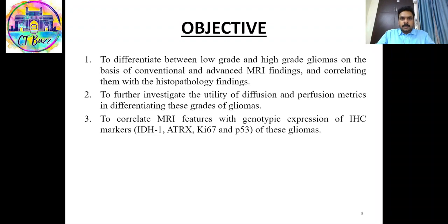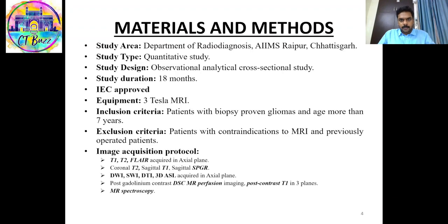The objectives of our study were three. First, to differentiate between low-grade and high-grade gliomas on the basis of conventional and advanced MRI findings and correlate them with histopathology. Second, to investigate the utility of diffusion and perfusion metrics in differentiating glioma grades. Third, to correlate MRI features with genotypic expression of IHC markers like IDH1, ATRX, Ki-67, and p53.